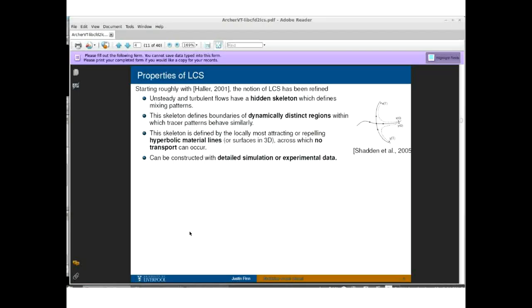Starting with roughly George Haller's work in 2001, this notion of Lagrangian coherent structures has come out of dynamical systems theory and been refined more or less continuously since then. It's still a field in progress in terms of where the theory is going. But basically, we can lay out some key points about what LCS are and their properties. As I alluded to in those quotes at the beginning, LCS really have this property that in an unsteady and turbulent flow, they are the hidden skeleton that defines these mixing patterns. The skeleton defines the boundaries of dynamically distinct regions, the boundaries of tracer patterns that we see when we have dyes or pollutants or different species that we want to track within a flow.